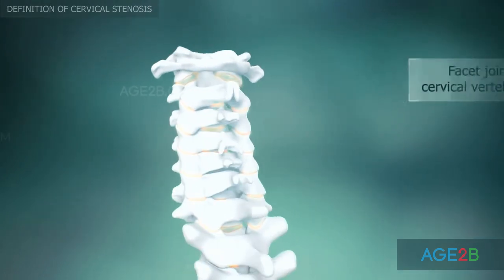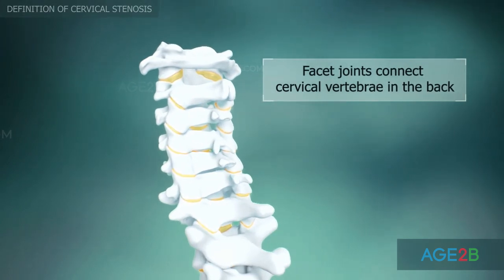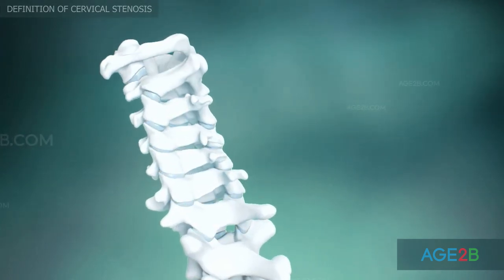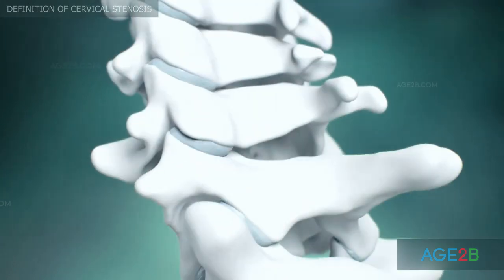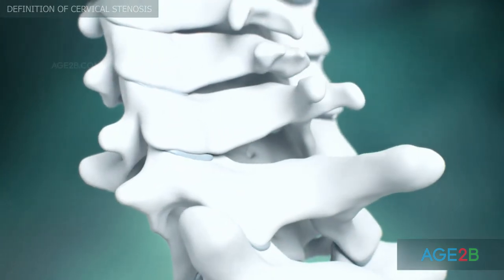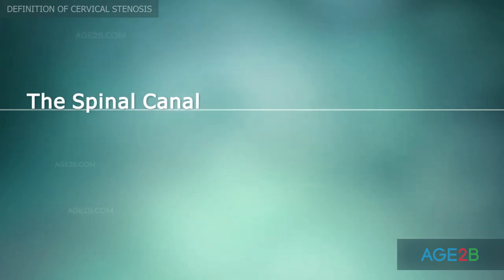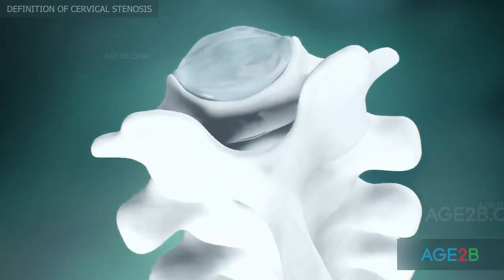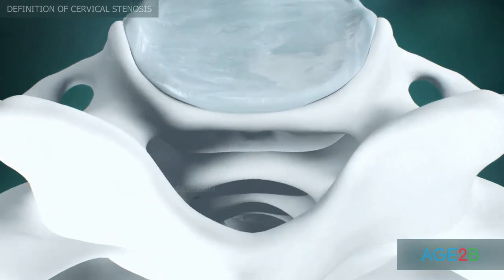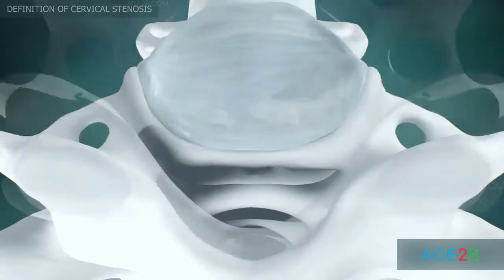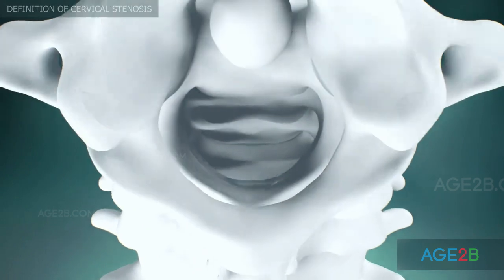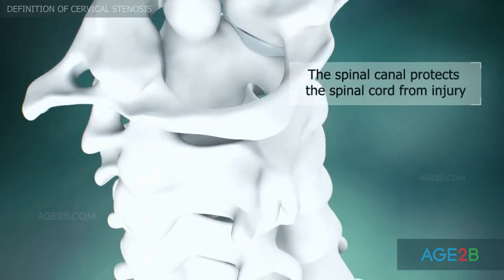Paired facet joints connect the seven cervical vertebrae and allow for movement in different directions. Behind the vertebral bodies is located a vertical tunnel called the spinal canal. The spinal canal contains the spinal cord and protects it from injuries.